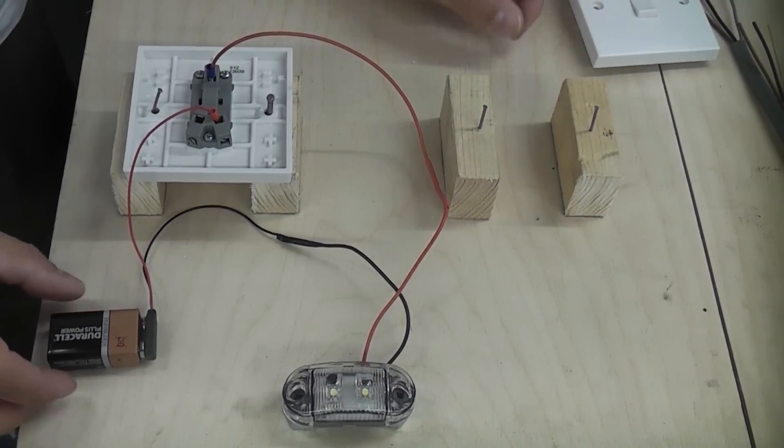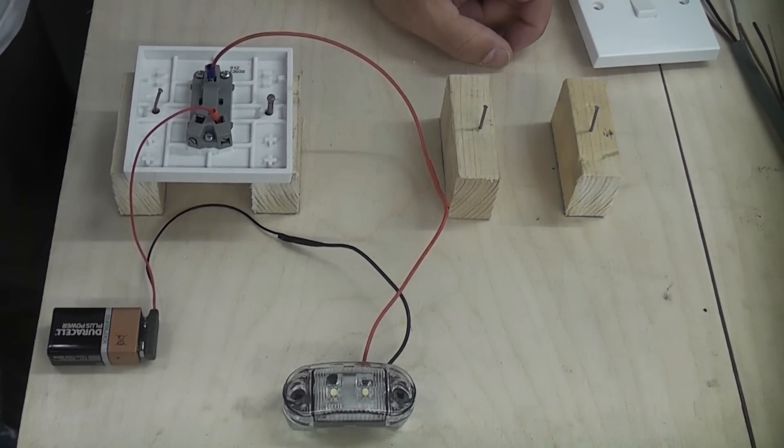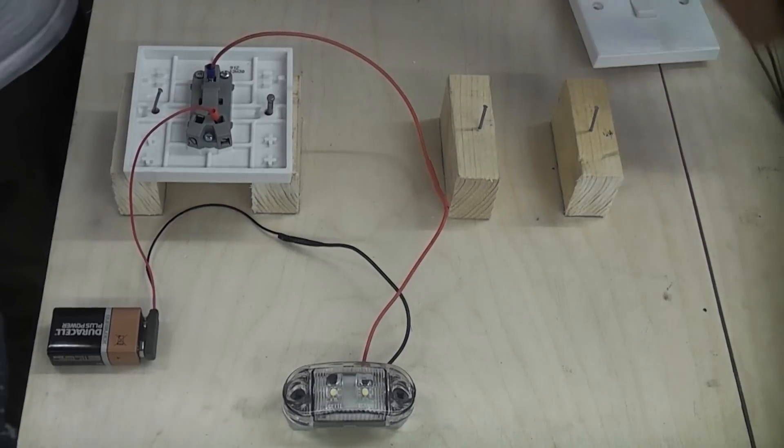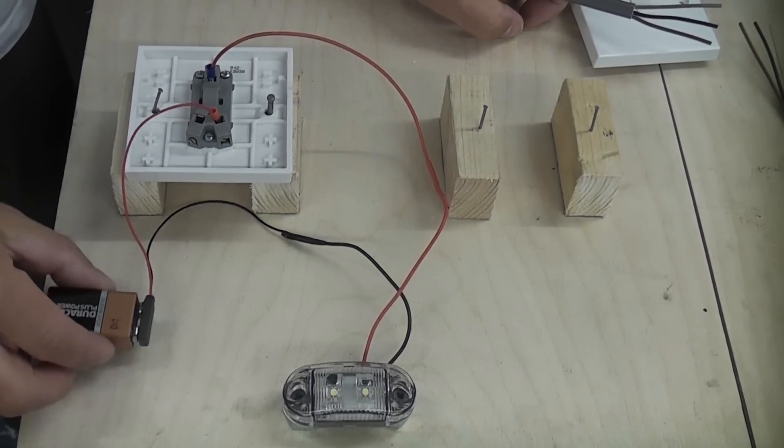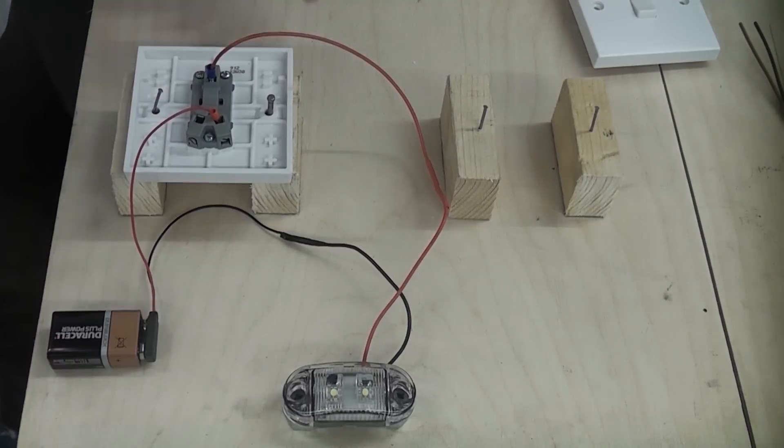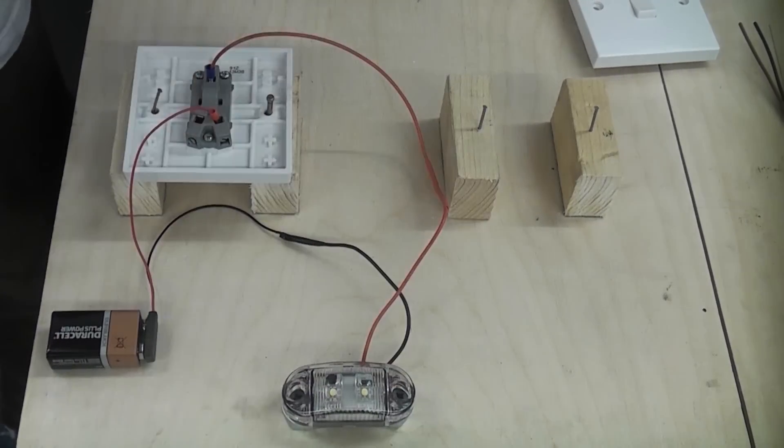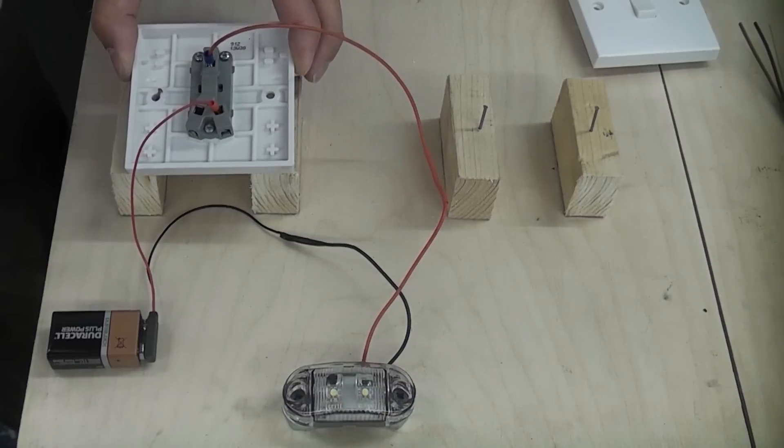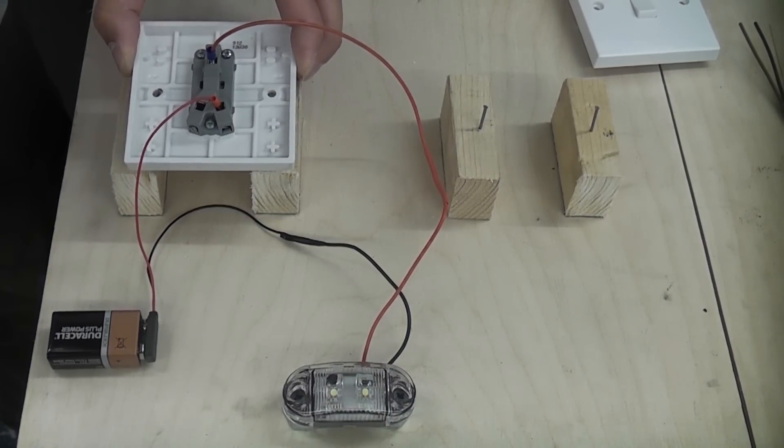I've created a basic circuit and this is exactly the same as what you will get in your property. The only difference is that we're using a battery instead of the power supply which will be a consumer unit. We're also using a low voltage lamp but the switch is exactly the same as what you would find in a normal property.